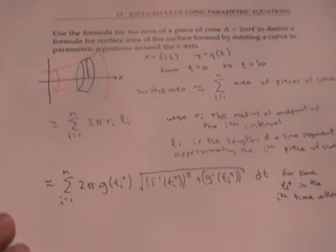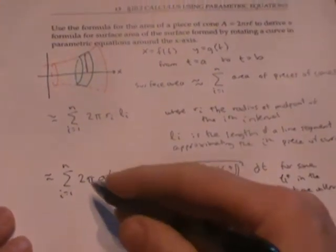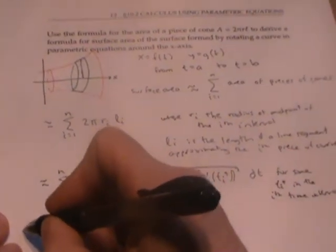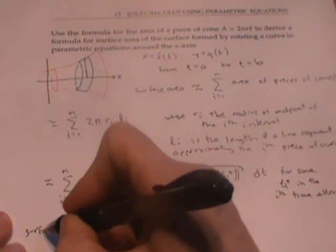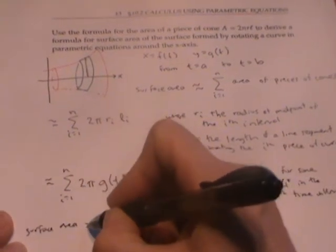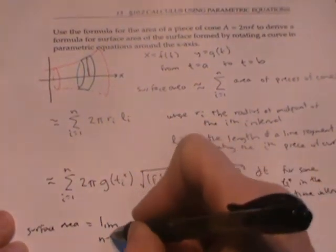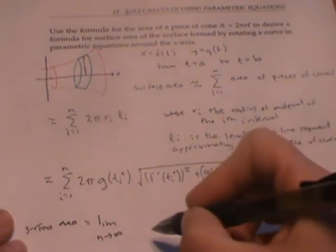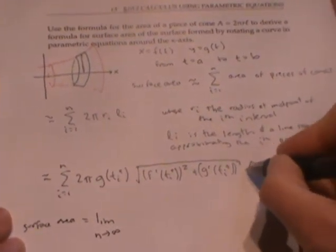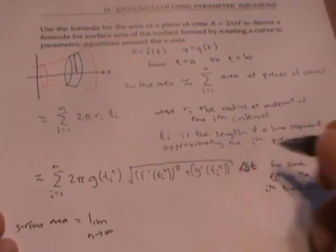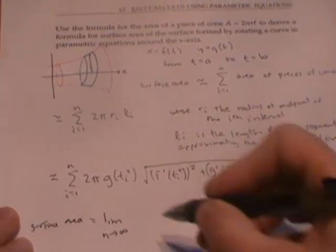As usual, we can find the exact surface area by taking the limit as n goes to infinity. Sorry, this is supposed to be a Δt here. In the limit, it becomes dt.